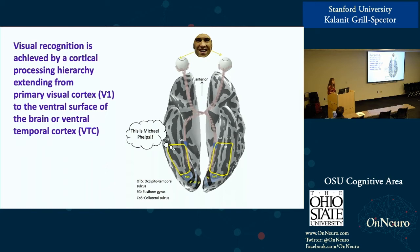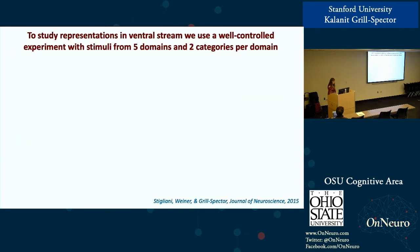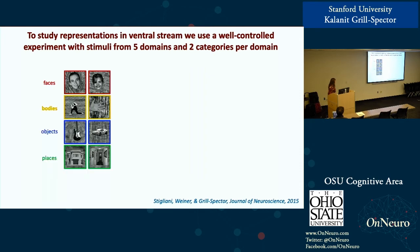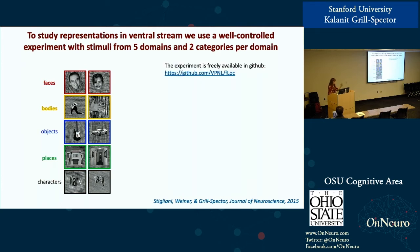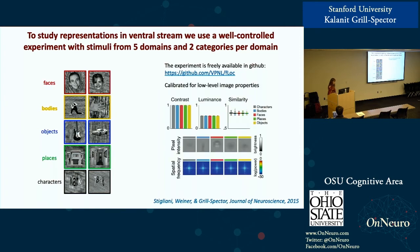Ventral temporal cortex is not a homogeneous piece of tissue. Nancy's group has discovered several category-selective regions within this cortical expanse. We identify these regions in each individual brain using a localizer experiment, in which subjects sit in the scanner and see short four-second blocks of images from different categories — faces, bodies, objects, places, and characters — with two subcategories from each domain. This experiment is available on GitHub. We spend a lot of time calibrating the stimuli and controlling for low-level confounds across categories.